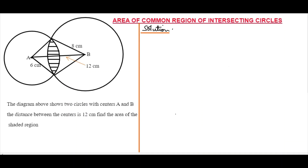The question before us asks for the area of the common region of intersecting circles. I suggest you pause the video and give it a try, then we can look at it together. The diagram shows two circles with centers A and B. We are told the distance between the centers is 12. Find the area of the shaded region.